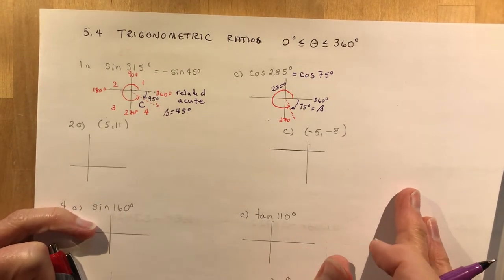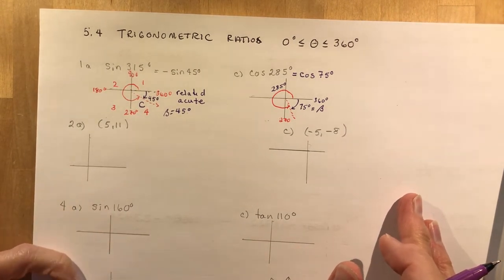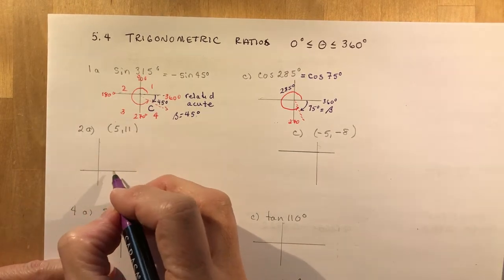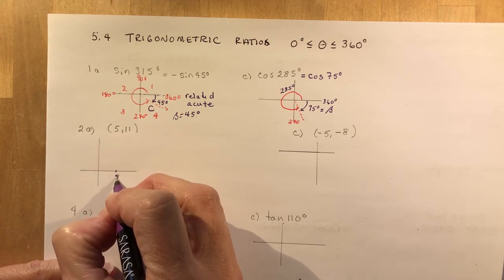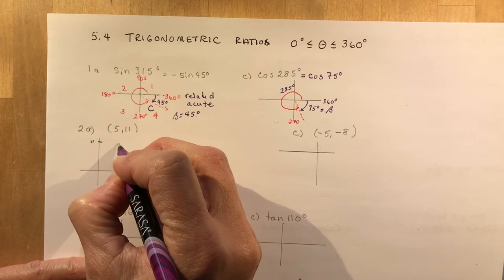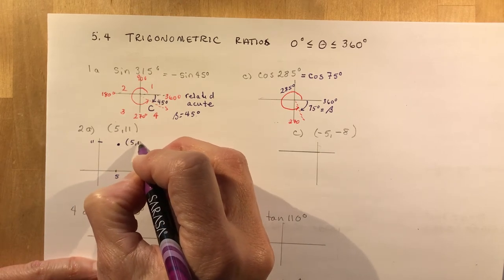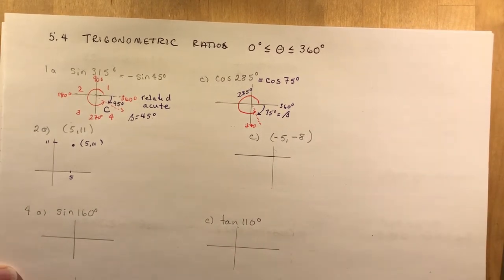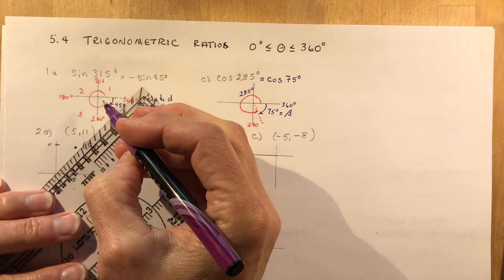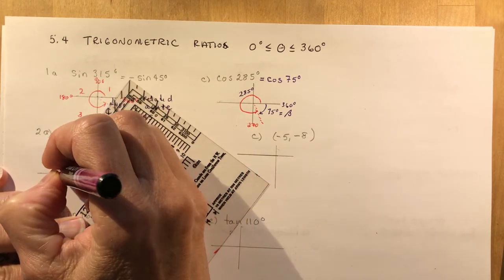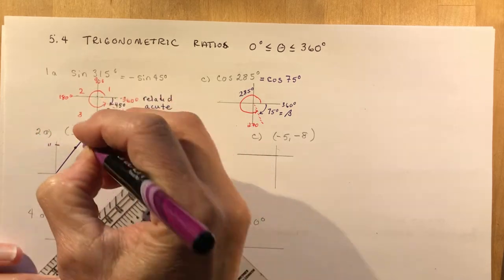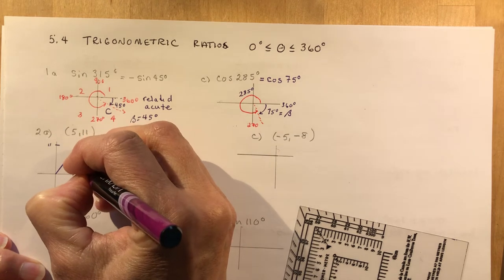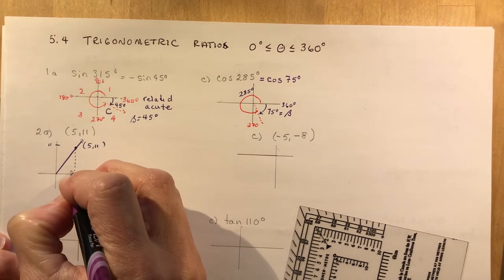Number two asks: each point lies on the terminal arm of an angle theta in standard position — sketch the angle theta. We estimate this as the point (5, 11). You should have a ruler. This point is on the terminal arm in standard position. There's the terminal arm, and I'm going to drop a perpendicular down here to form a right angle triangle.